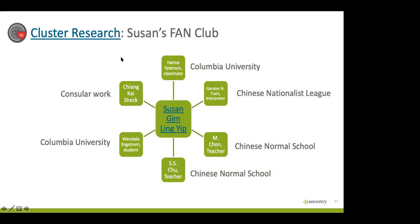Remember tip number four — cluster research. Who are Susan's fan club? We know from newspaper articles that Susan had university student connections and a couple of other teachers. We know she met Shankha Shaq and Gordon Ewan of the Chinese Nationalist League. If I wanted to expand my research, I could look for the people that knew Susan to get a much greater in-depth look at her life.